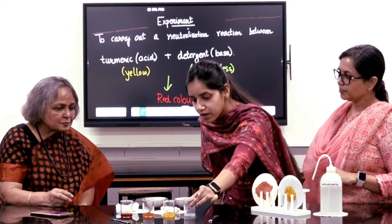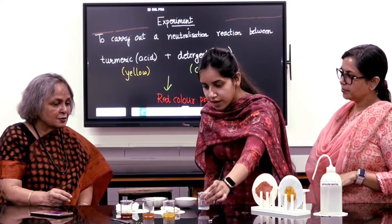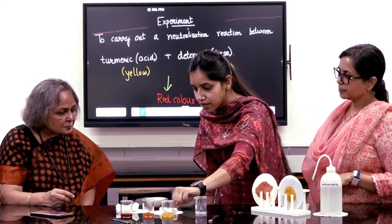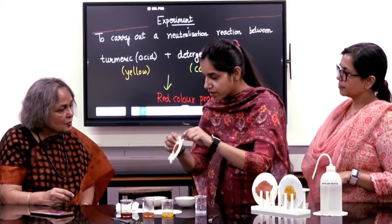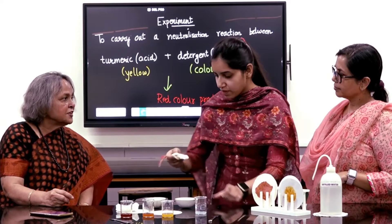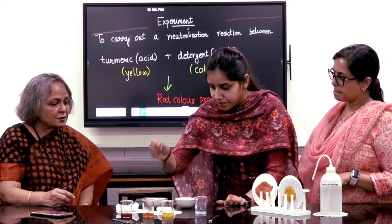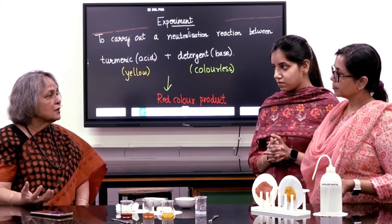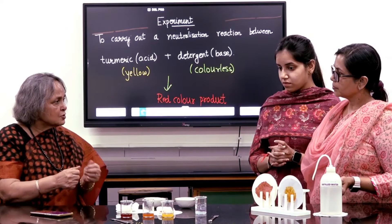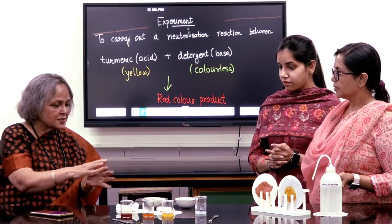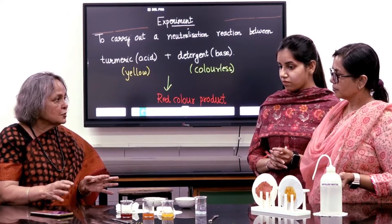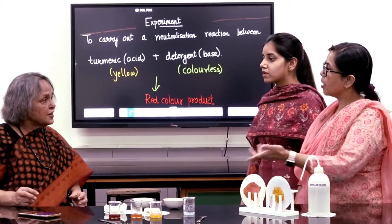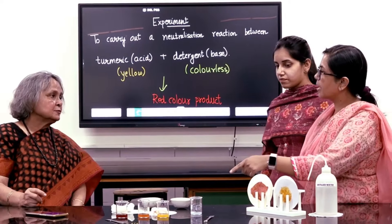We have prepared here a detergent solution. When we treated our turmeric with this detergent solution, it has turned reddish-brown. And so now this is the colour that you get. But sometimes we get a pink colour — this is because of the rubbing. That part is basic; this part washes off. Fading of this colour. Actually this is a red-brown colour.